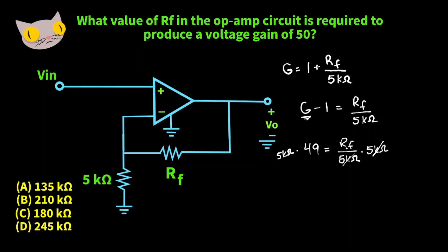So now we have RF is equal to 49 times 5,000 ohms and that gives us a value of 245,000 ohms. So D is the correct answer.